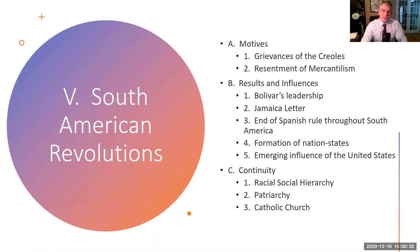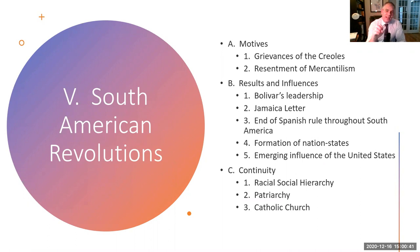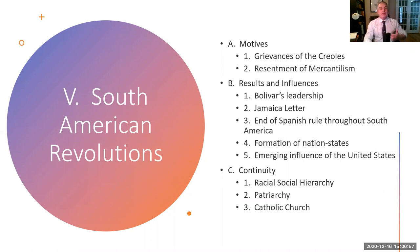Within the South American region, you have continuities. The racial-social hierarchy remains — that social pyramid puts European descent at the top, then mestizos and mulattos in the second class, then indigenous people and enslaved Africans at the bottom. That hierarchy is going to remain. Second, the patriarchy is going to remain — the idea that men have privilege and women have no rights stays intact. Third, the Catholic Church will remain a significant power throughout South America. Even though the Catholic Church is associated with traditional authority, here in South America it stays as an authority.